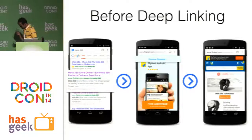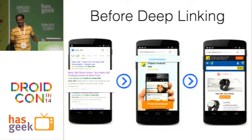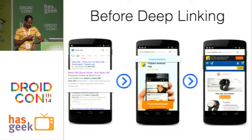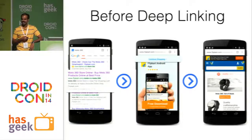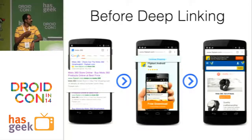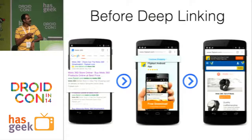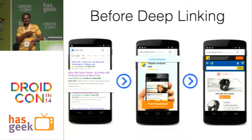Consider this use case: you want to buy a product — I'll try buying a Moto 360 watch. I Googled it, got a list of search results, clicked a link, and landed on a page where I already have the app installed. Now I am given two options: either continue shopping using the web app, or download the app again. This experience is suboptimal, right?